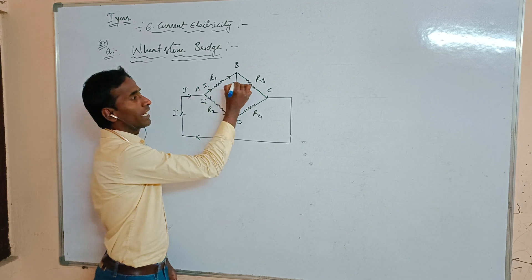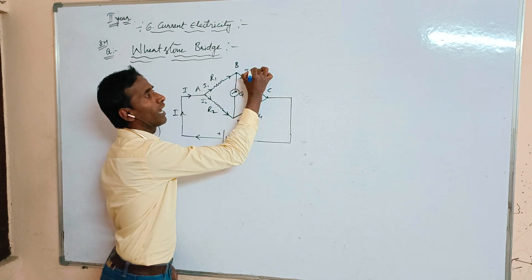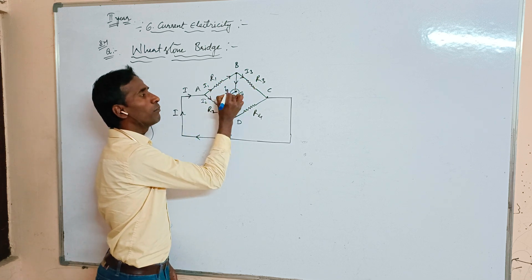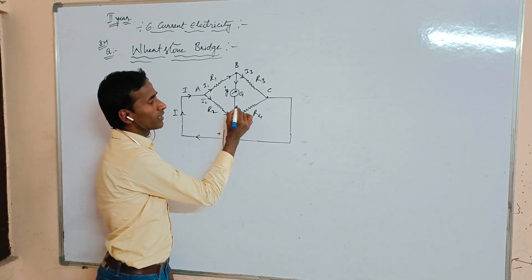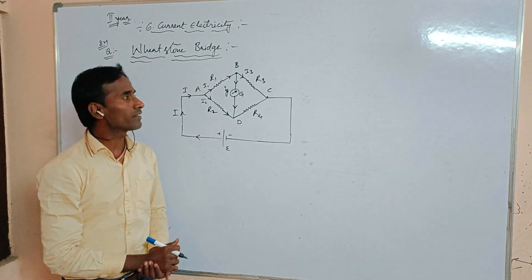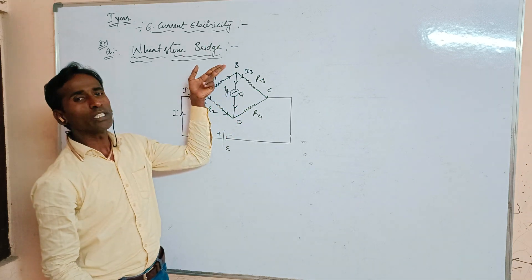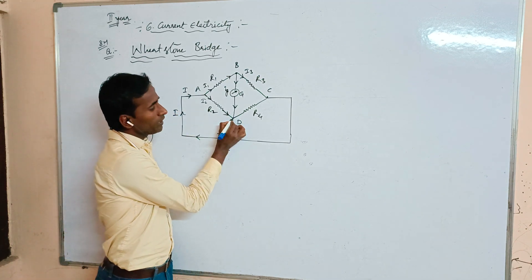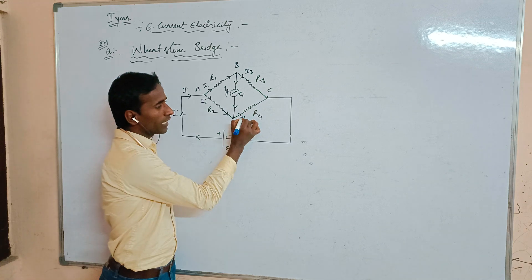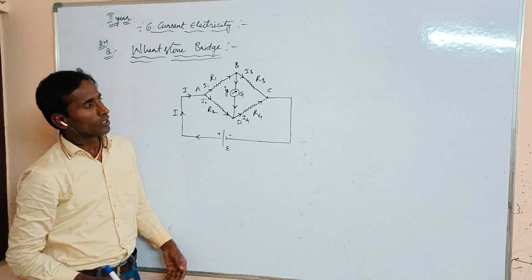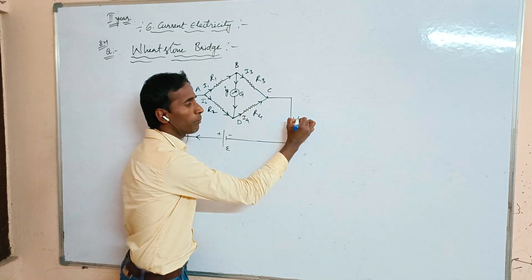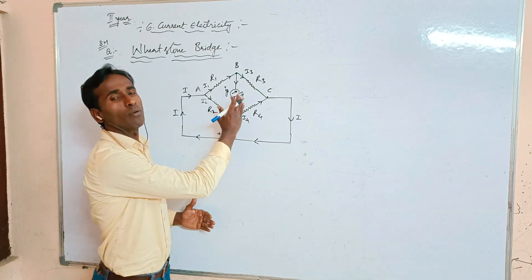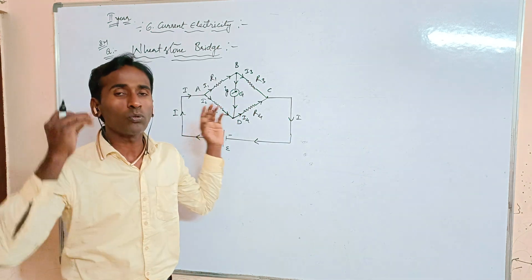When the current meets at junction B, it is divided again. I3 passes through resistance R3, and IG is the galvanometer current passing through the galvanometer, which is connected between junctions B and D. Then at junction D, I4 passes through resistance R4, and the total current meets at point C and returns to the battery's negative terminal.